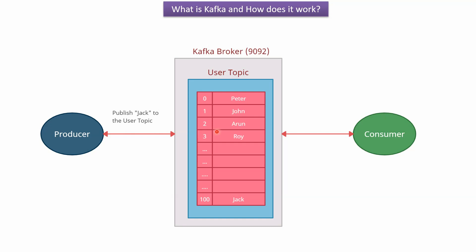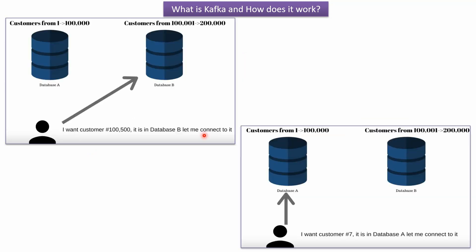In one day, it will create a problem. In this kind of situation, what we do in a database is sharding. In the case of a database, customers from 1 to 100,000 will be stored in database A, and customers from 100,001 to 200,000 will be stored in database B. If I want customer number 100,500, it is in database B, so I have to connect to database B to get the data.